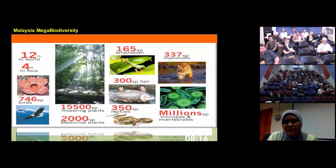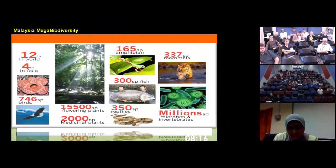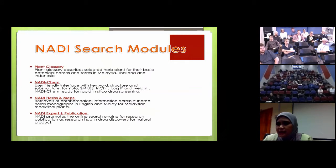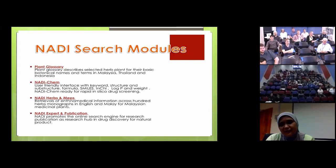Sources of drugs not only come from plants - a lot of drugs also come from microbials, like penicillin, which came from a mold. In NADI, we have different search modules including a plant glossary, because in Malaysia certain plants are called different names in different places, though the scientific name is only one. We collaborated with colleagues in Thailand and Indonesia to have a complete list of local plant names and map them to their botanical names.